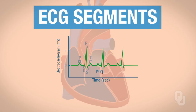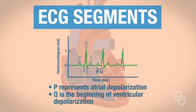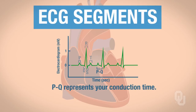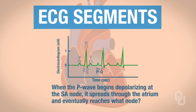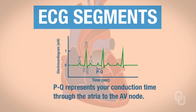The next segment is the P-to-Q segment. P represents atrial depolarization, and Q is the beginning of ventricular depolarization. So that means P-to-Q represents your conduction time. When the P wave begins depolarizing at the SA node, that depolarization spreads through the atrium, and eventually it reaches the AV node, which is located in the bottom of the right atrium. So this P-to-Q segment represents the conduction time through the atria to the AV node.